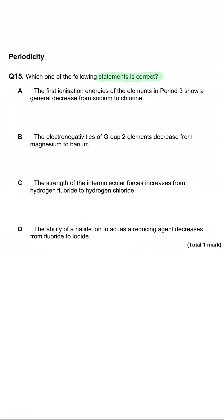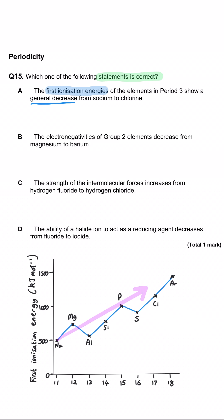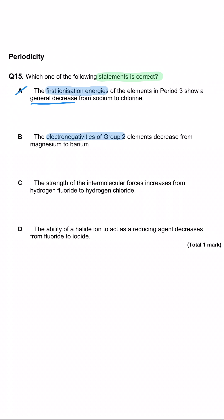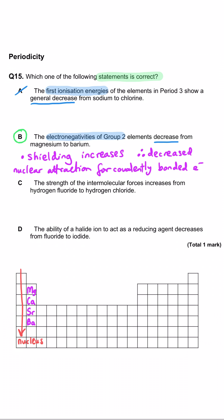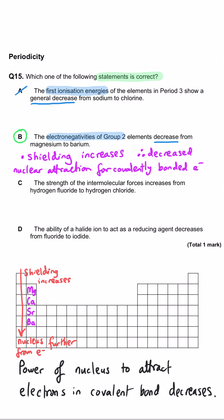Which one of the following statements is correct? A: first ionization energies of period 3 elements show a general decrease from sodium to chlorine — no, they show a general increase. B: electronegativities of group 2 elements decrease from magnesium to barium — yes, because the nucleus ends up further from any covalently bonded electrons and shielding increases due to intervening electron energy levels, reducing the nucleus's power to attract bonded electrons. B must be the correct answer.